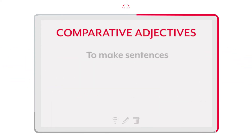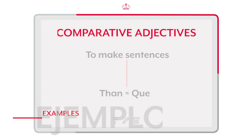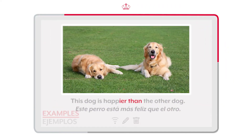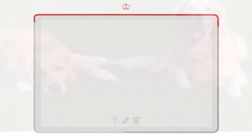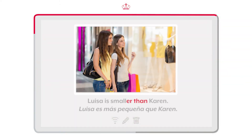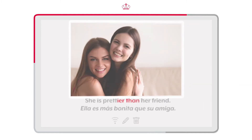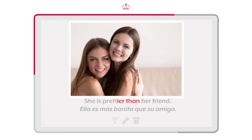In order to make sentences, we have to use the word 'than'. Para poder crear enunciados, tenemos que usar la palabra 'than', que es el equivalente a 'que'. For example: This dog is happier than the other dog. Este perro está más feliz que el otro. Luisa is smaller than Karen. Luisa es más pequeña que Karen. She is prettier than her friend. Ella está más bonita que su amiga.